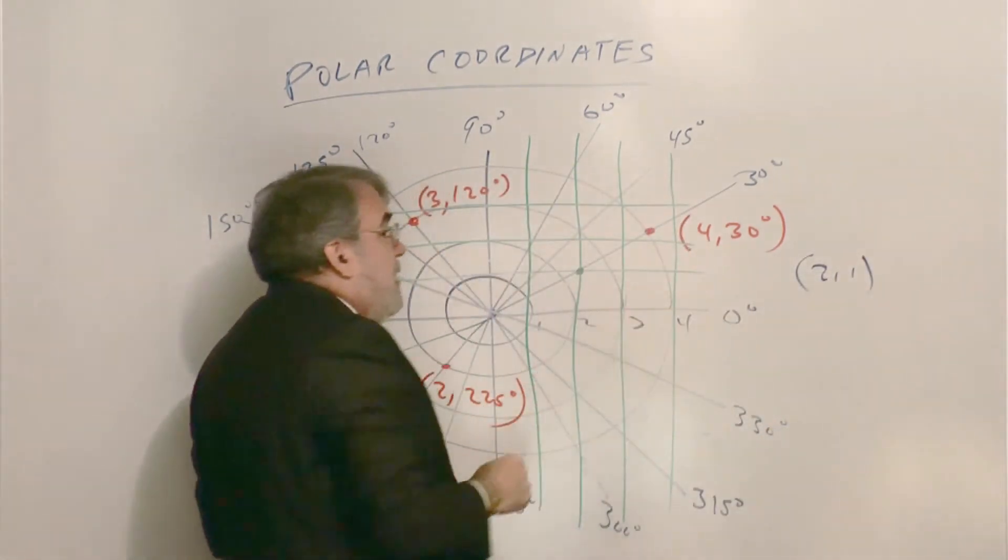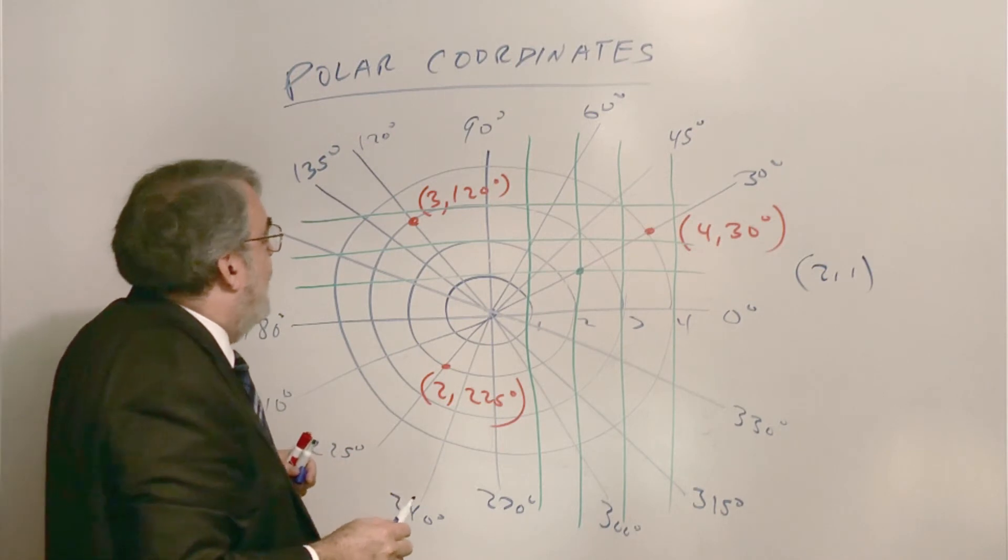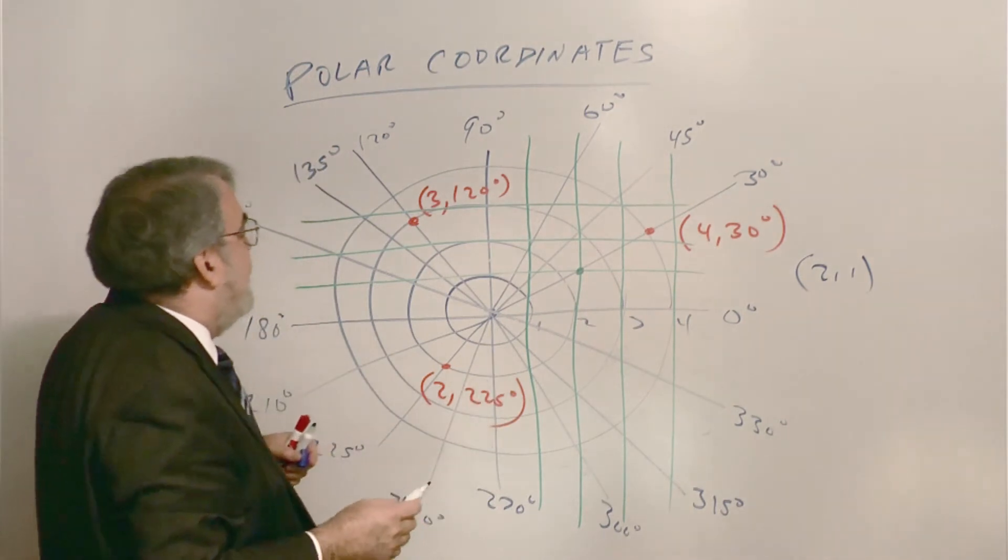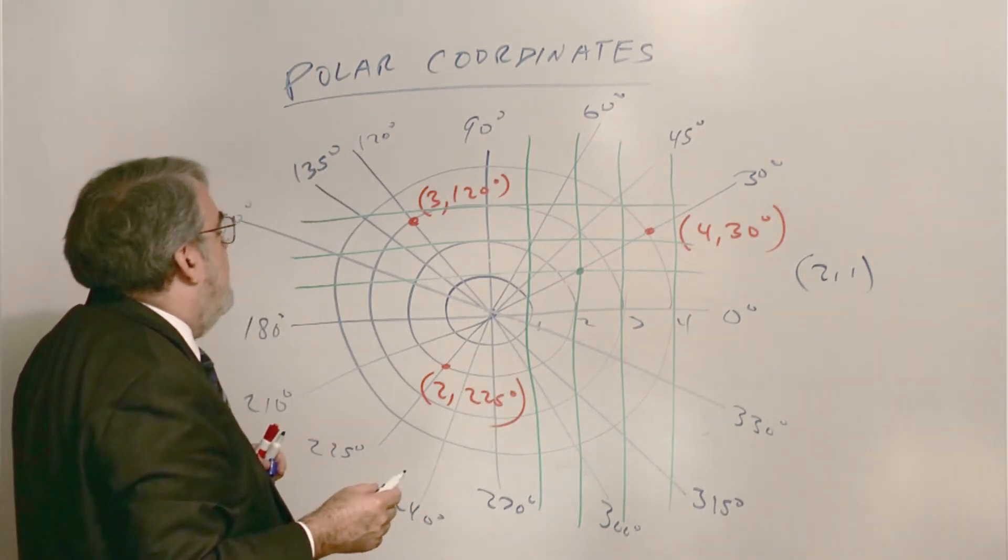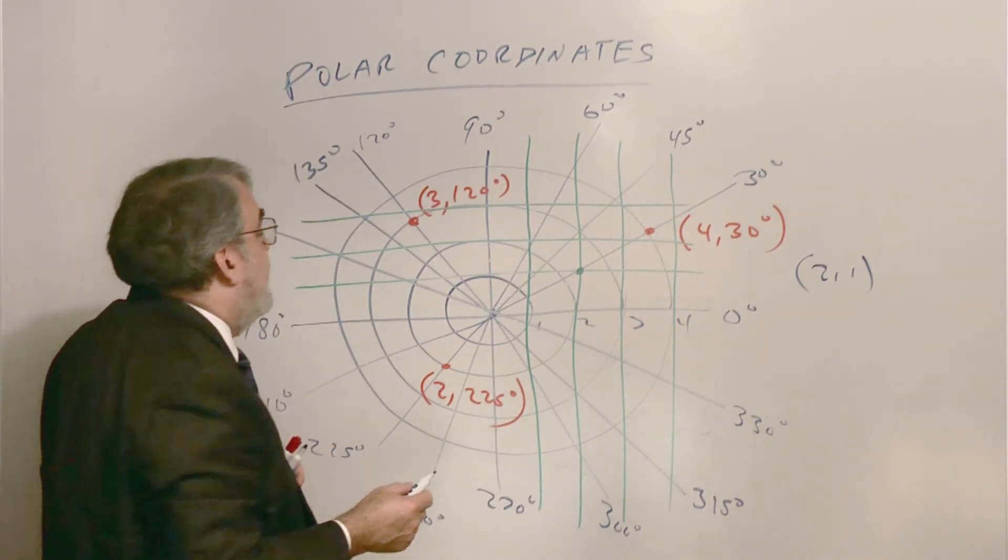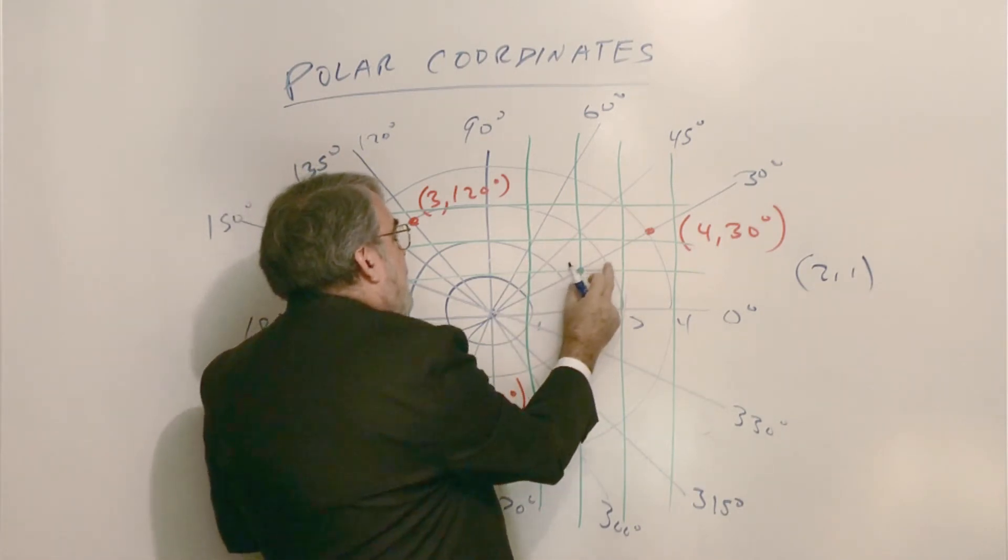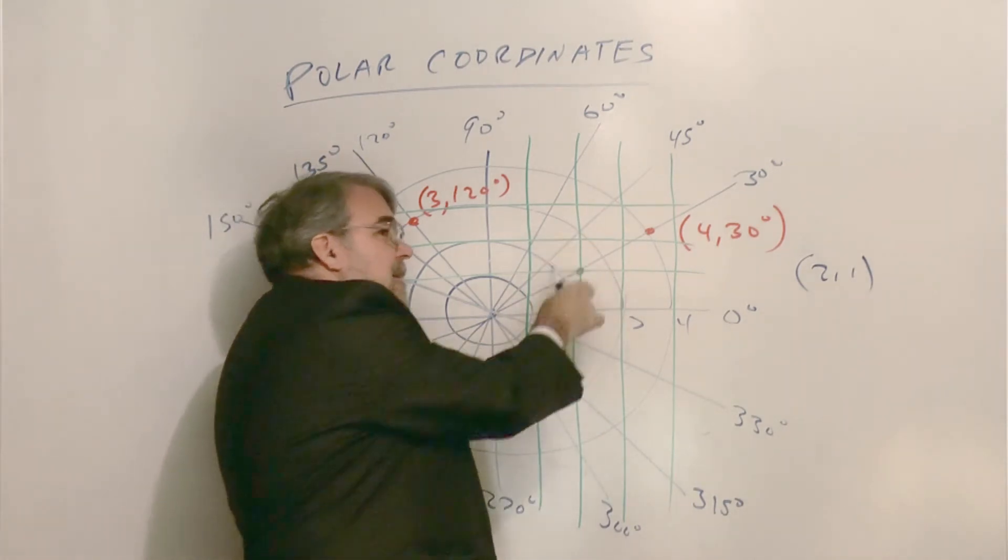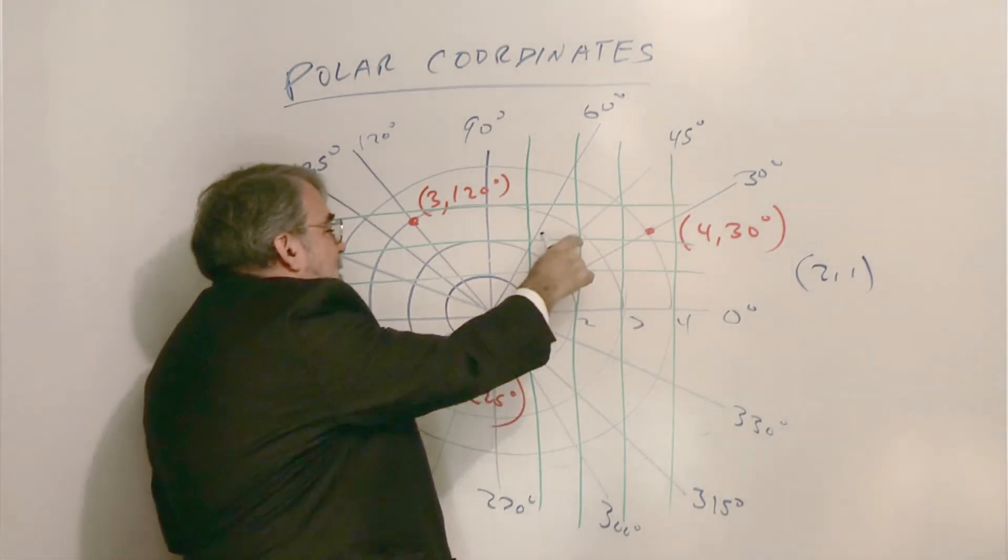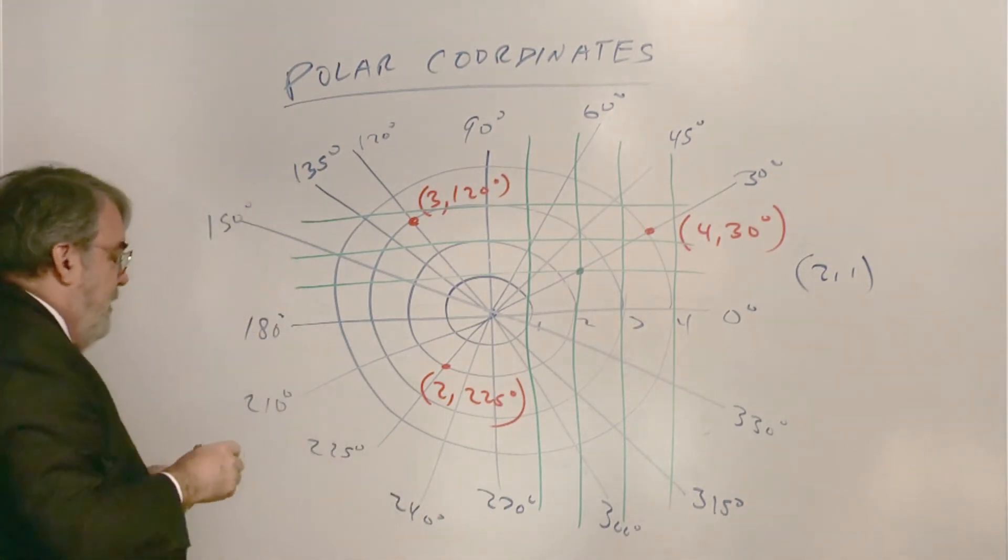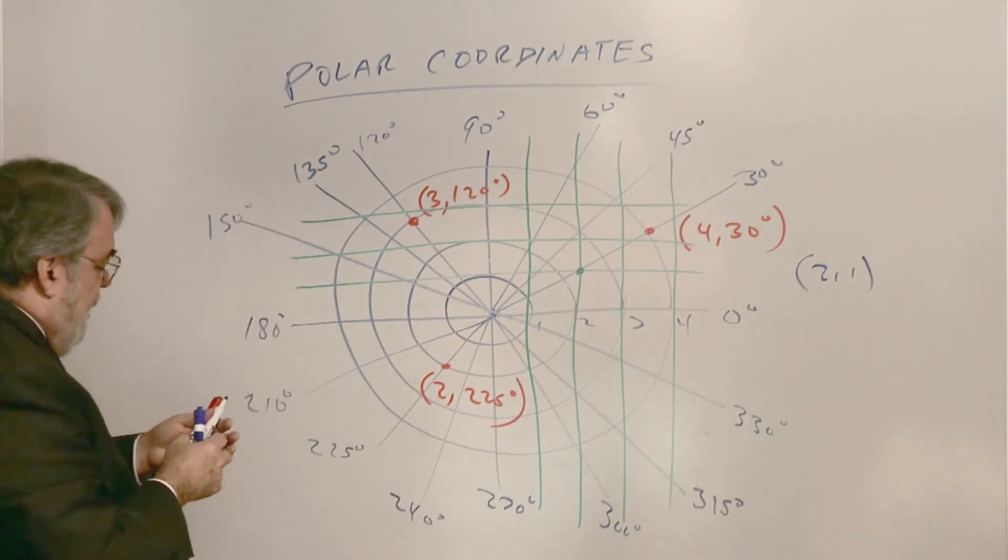And two comma one in XY coordinates—that may be correct. Let me see if this is 2, 1. Now bear in mind that those are XY coordinates. Two comma one would be, well, what would that be? The square root of five, I think. And then 30 degrees. So it actually does hit 30 degrees right there, but the length is between two and three. So it's getting kind of cluttered, isn't it? But this point is between two and three. I think you'll find it's the square root of five when you work it out.